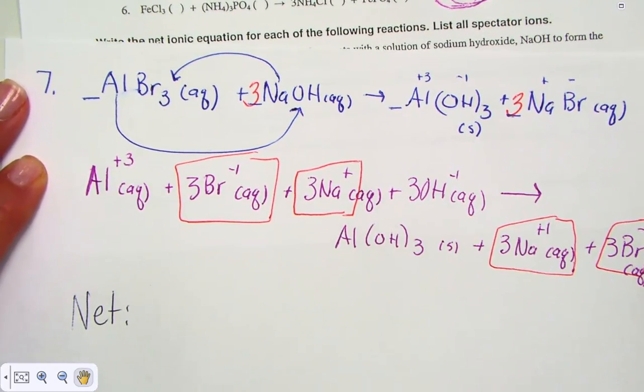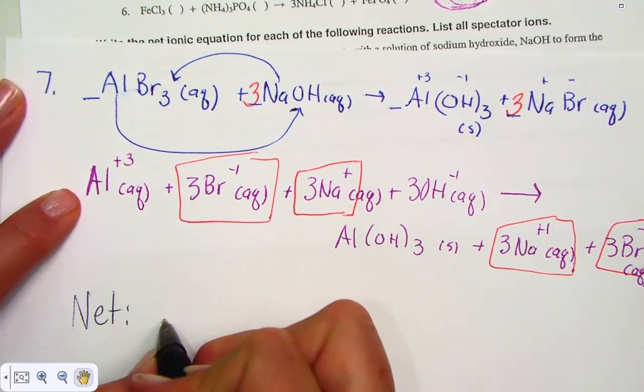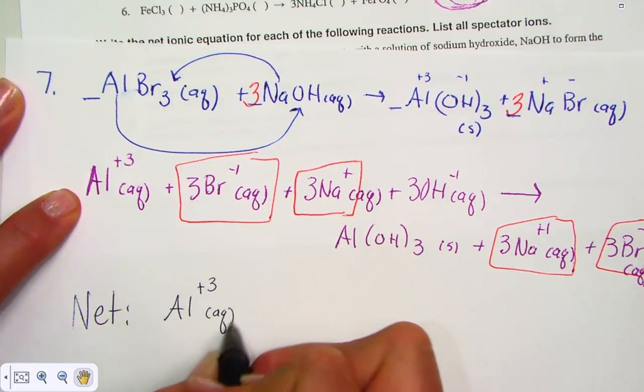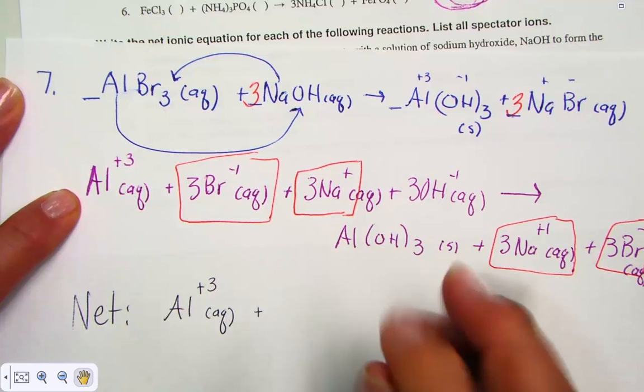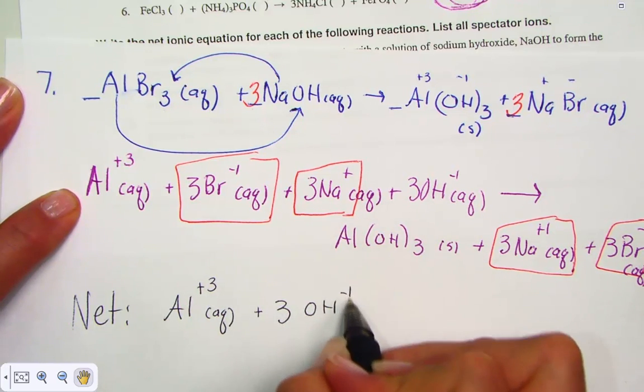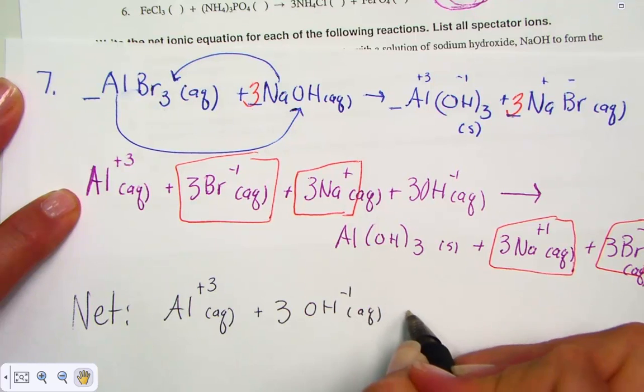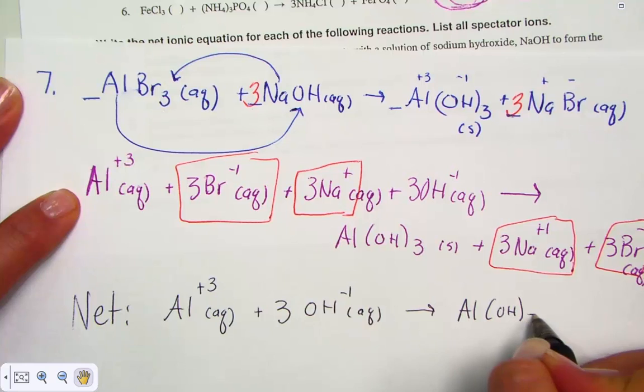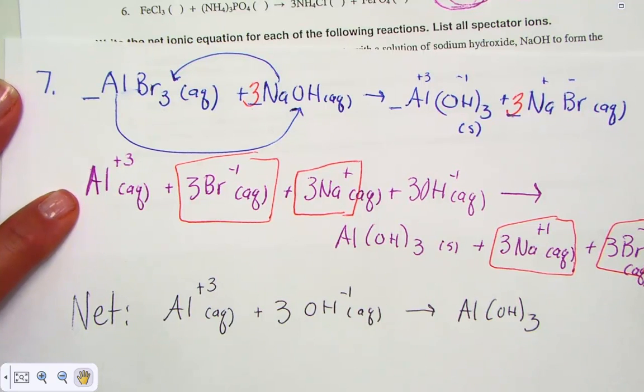Now when I write my net ionic equation, it eliminates those spectators. Here's what we have left: an aqueous ion of aluminum, three aqueous ions of hydroxide, combining to form the solid precipitate of aluminum hydroxide.